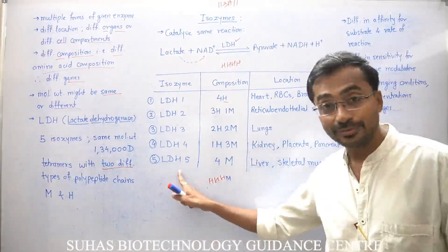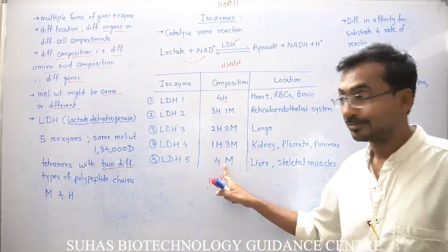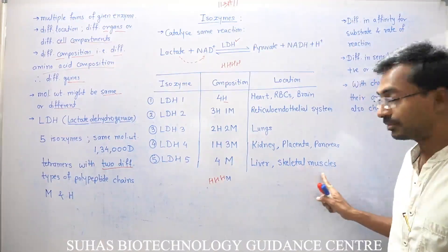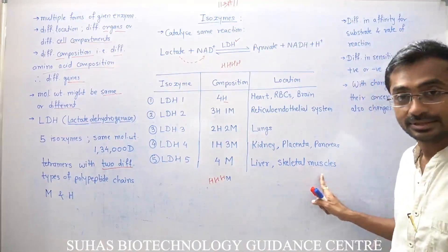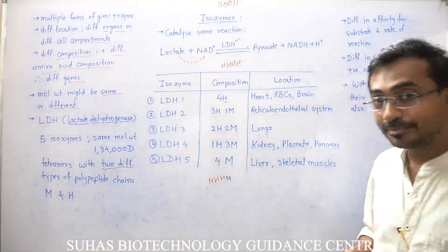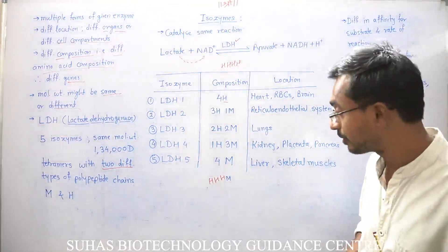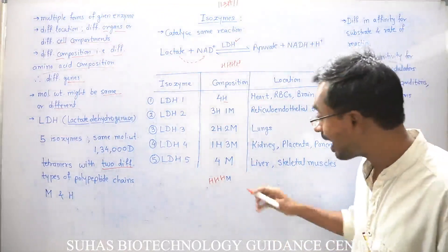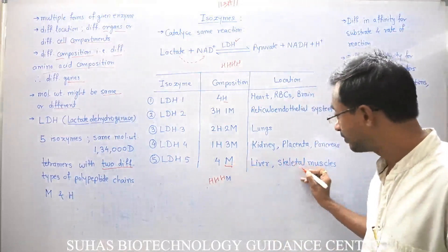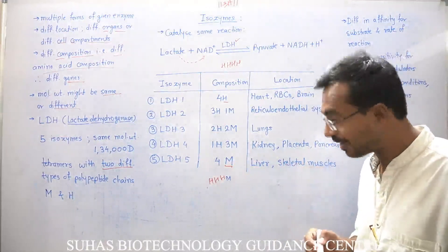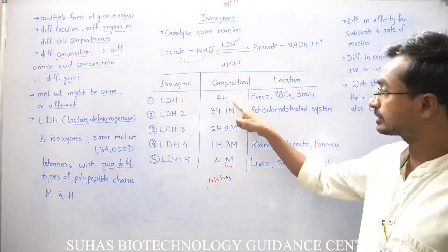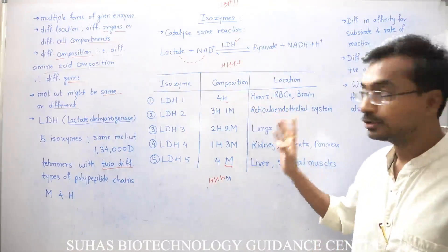LDH5 has composition 4M and is found in liver and skeletal muscles. M was designated because it was first discovered in skeletal muscles, while H was designated because it was first discovered in heart.